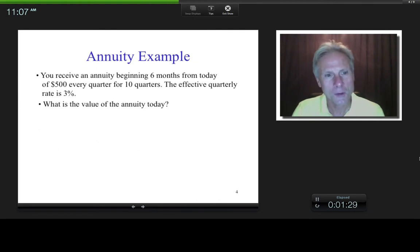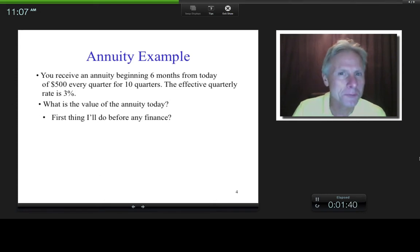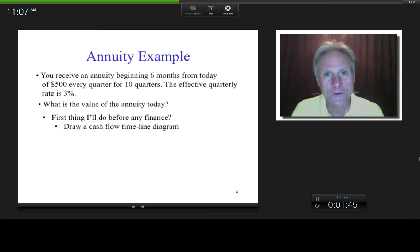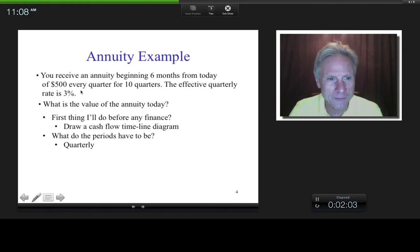Alright, so here we go. We'll start off with the first one. What is the value of the annuity today? Now, what am I going to do before I do any finance whatsoever? I'm going to take a stand on the interpretation of the problem. And how do I do that? Well, I draw a cash flow timeline diagram. So if we look at this problem, what do the periods have to be? Well, when does some kind of action happen with cash flows? We've got $500 every quarter, right? So the periods need to be quarterly.